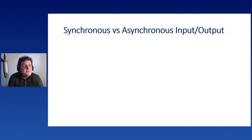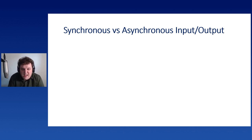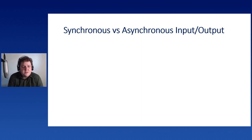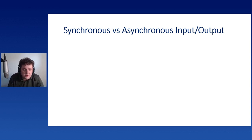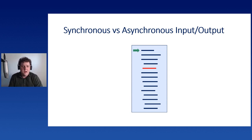Let's think about what it means for an application to be asynchronous. We're talking about asynchronous input and output - that's where the name AsyncIO comes from. Consider a very simple synchronous Python application, like a simple SQLAlchemy application. Your application boils down to a list of instructions - this is a single-threaded application. Python will execute those instructions one by one.